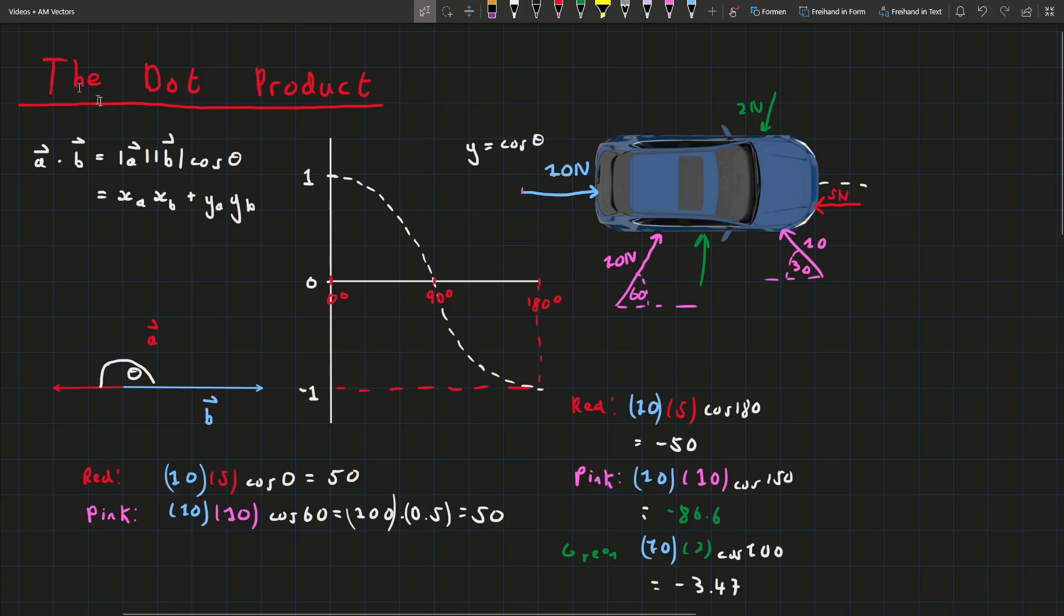So in the last video I showed what the dot product actually means and why we use this formula and we did a few examples here. Then I said in the next video I'd show why this is also a formula for the dot product.